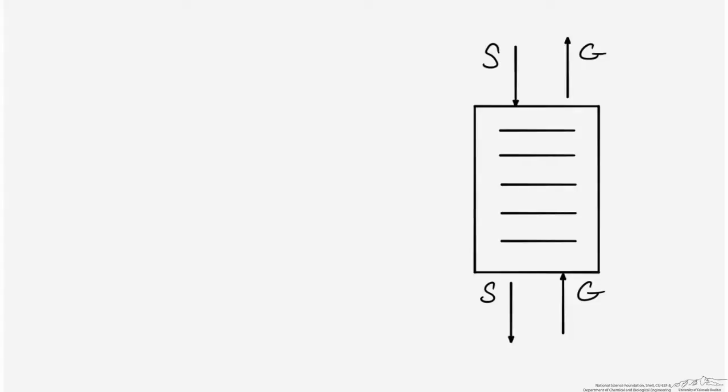Now let's look at our process schematic and start defining terms appropriate for this system. Since we're not working with a dilute system, the gas flow rates we use are going to be flow rates of the carrier gas, not the total gas flow rate. And the flow rate of the liquid stream is going to be just moles per hour of solvent. Since we're only dealing with moles per hour of either carrier gas or solvent, these flow rates won't change throughout our system. To deal with flow rates in terms of carrier gas and solvents we need to redefine our mole fractions in terms of mole ratios — moles of CO2 per mole of carrier gas in the gas stream, and moles of CO2 per mole of solvent in the liquid stream.